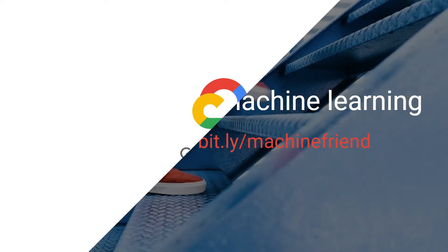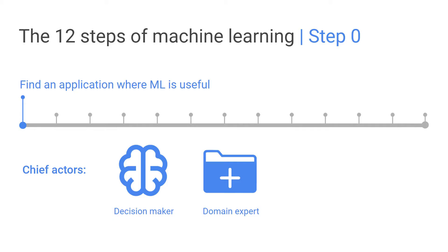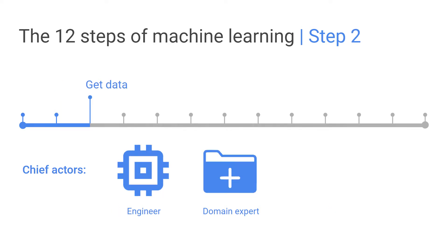Let's do a quick review of what we've learned. The 12 steps always start at step zero: figure out whether machine learning is actually what you need and find a good application for it. There you're thinking about what labels or outputs you actually want from your system. Then in step one, what are your goals? Which mistakes are worse than which other mistakes?